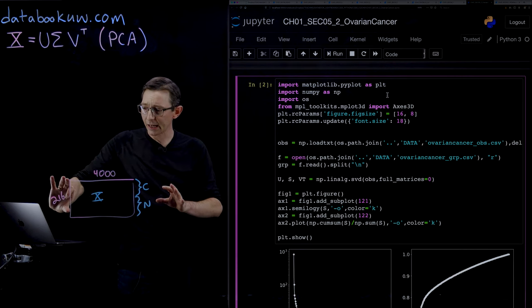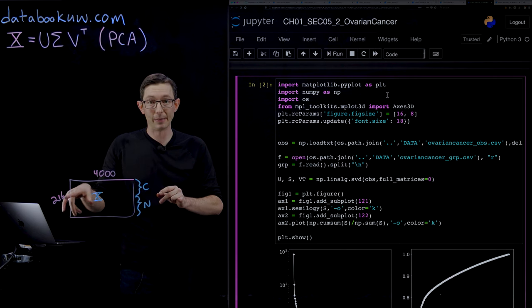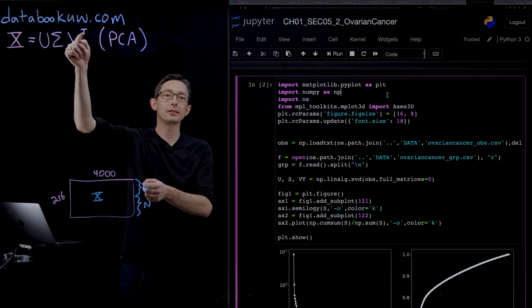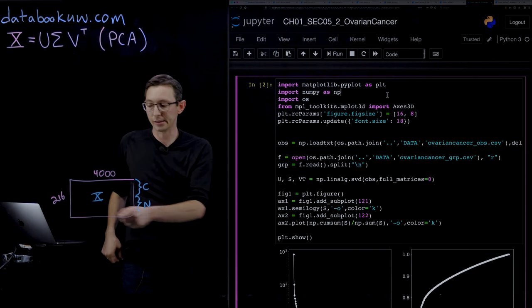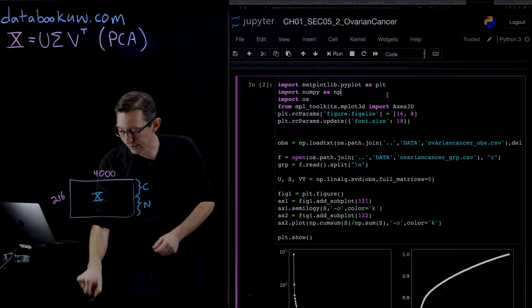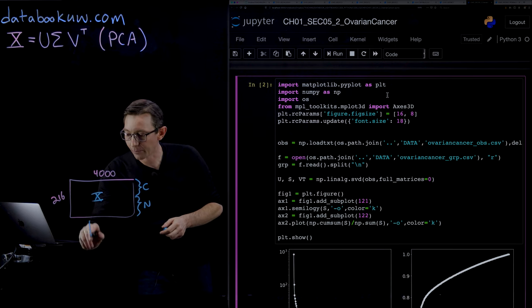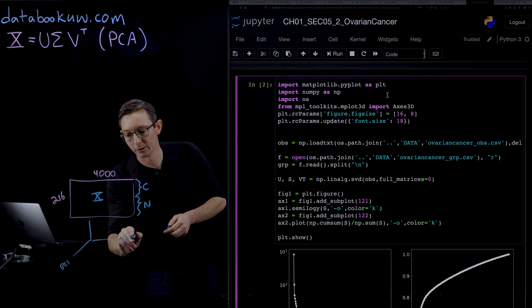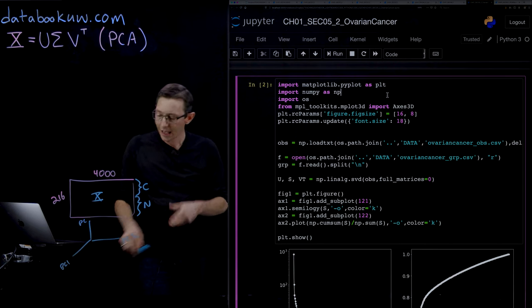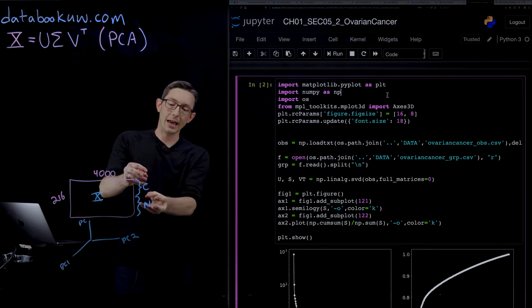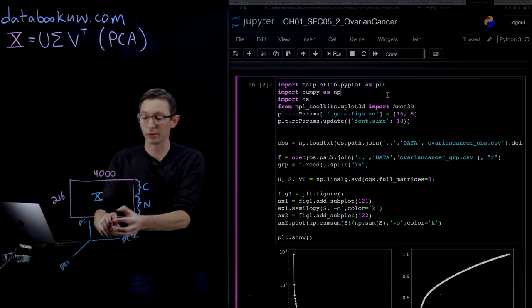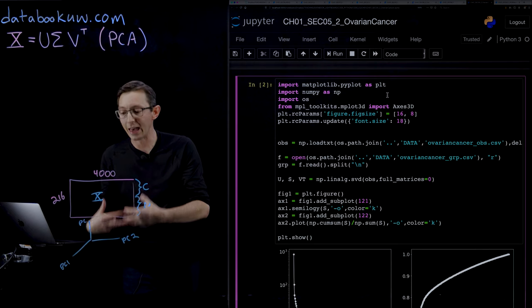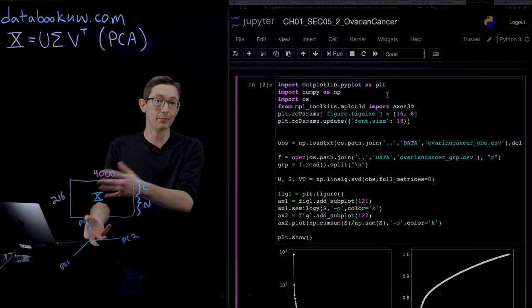Instead of visualizing all 4,000 dimensions of these patients' genetic sequences, I can plot just the first few eigengene sequences for each patient. So instead of this 4,000-dimensional space, I can project down into a low-dimensional space in terms of principal component 1, principal component 2, and principal component 3. If I'm lucky, then the patients that do and don't have cancer might cluster in this space, giving me information about what's different about them, how to maybe predict cancer in a new patient.